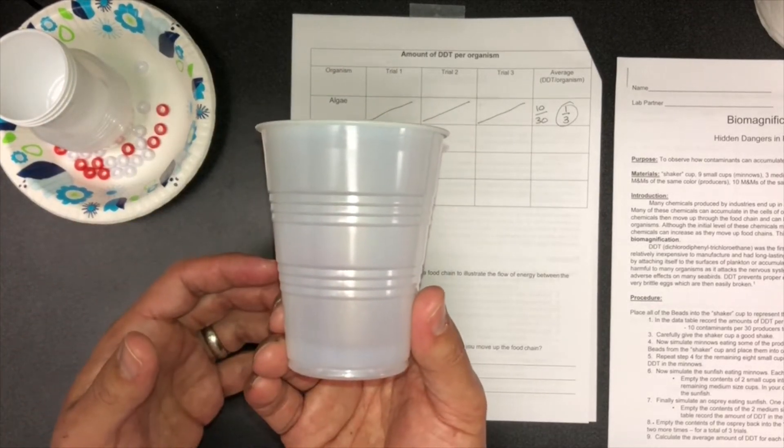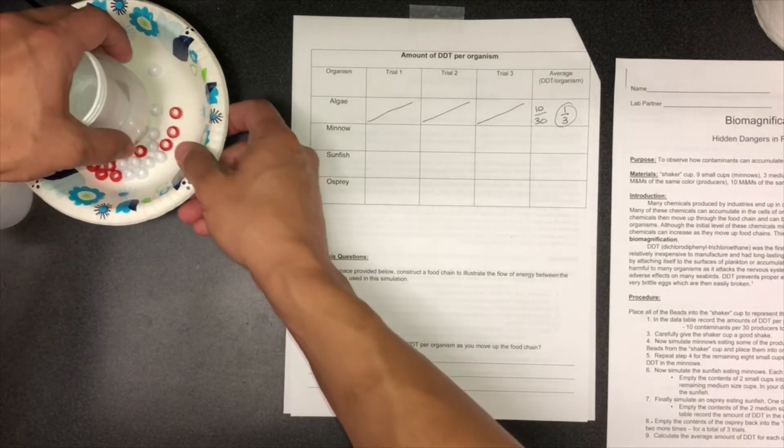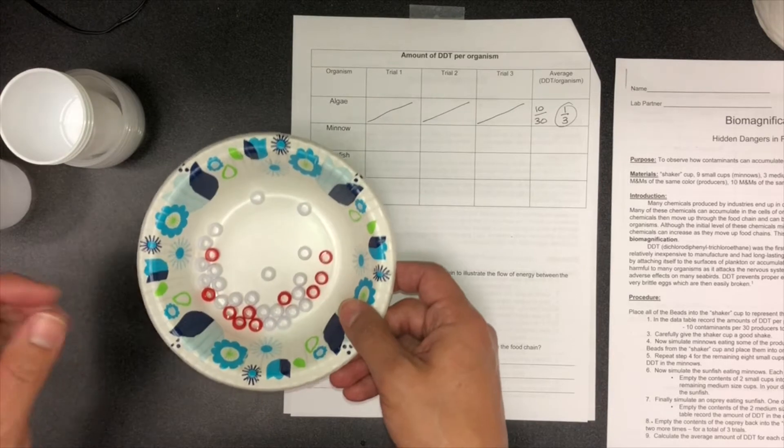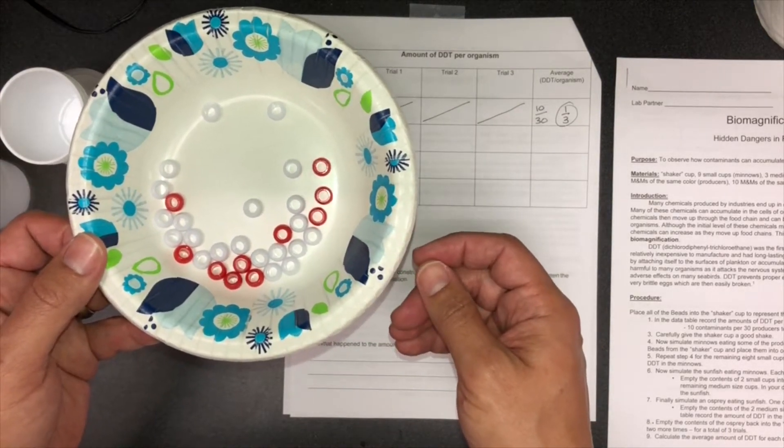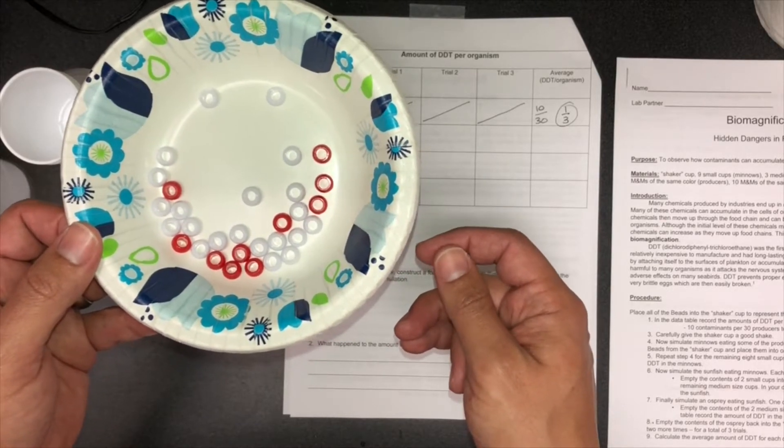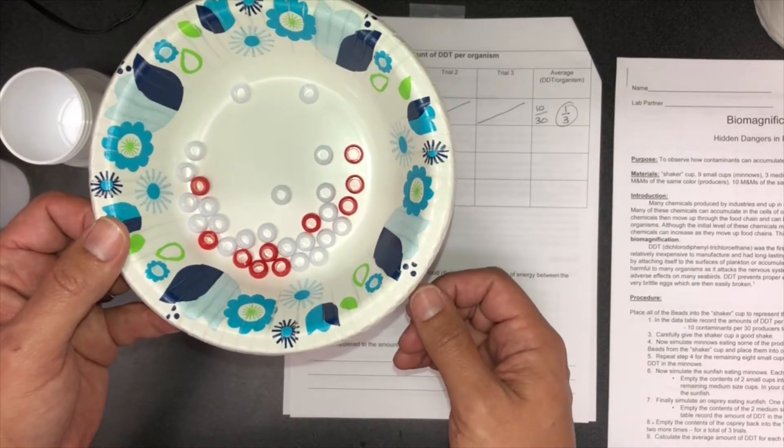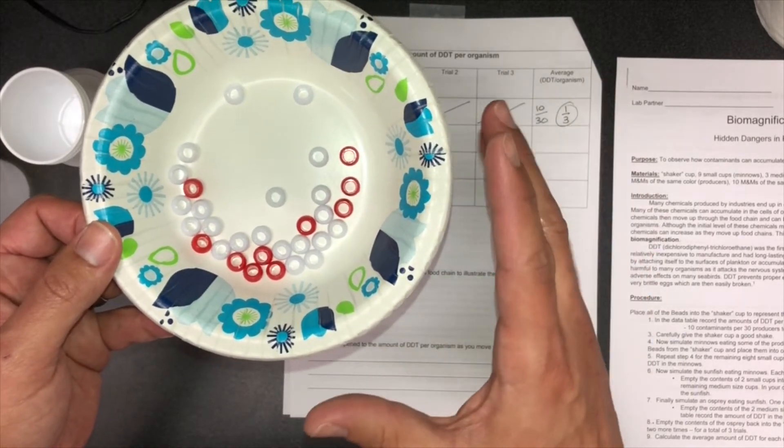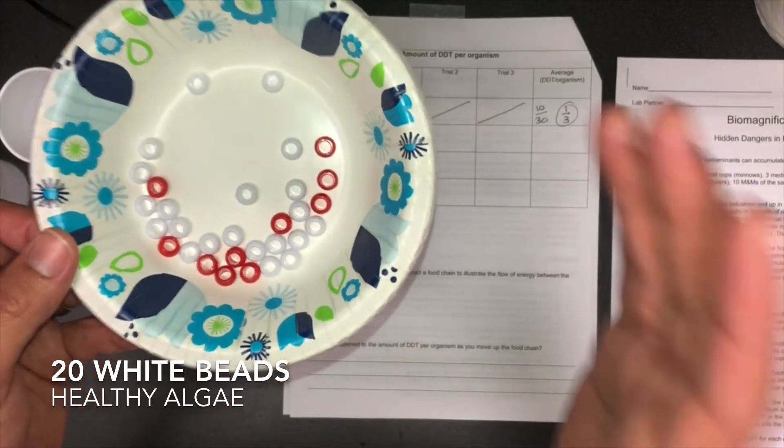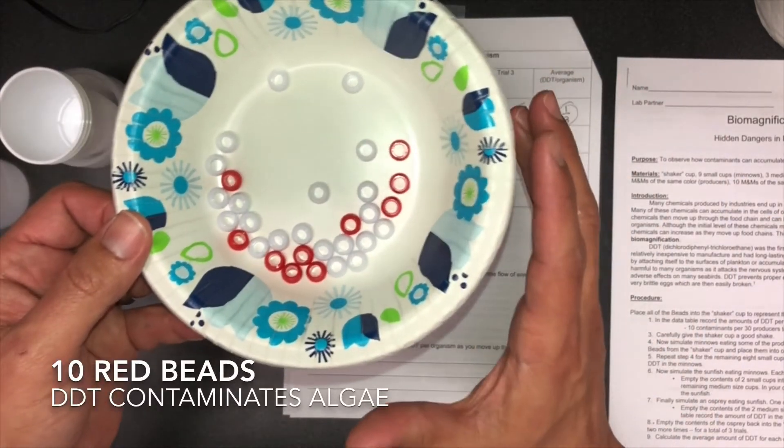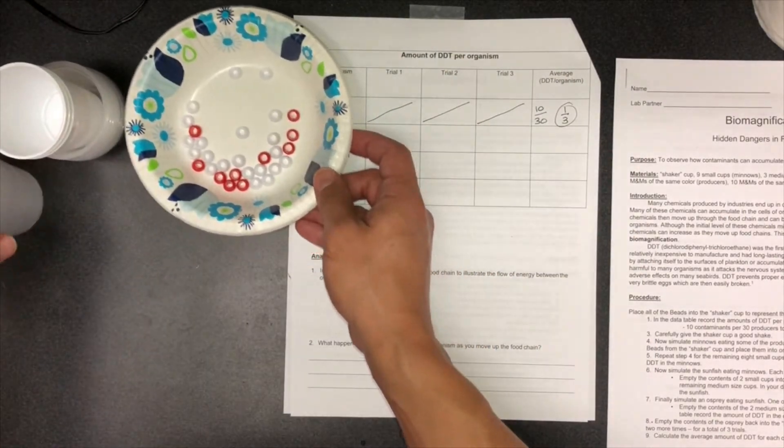It says M&Ms, but as you can see we'll be using beads instead. Now the red beads are the algae contaminated with DDT, and the white beads are regular algae that is not contaminated. Let me repeat that: the 20 white beads is regular algae, the 10 red beads is algae contaminated with DDT.